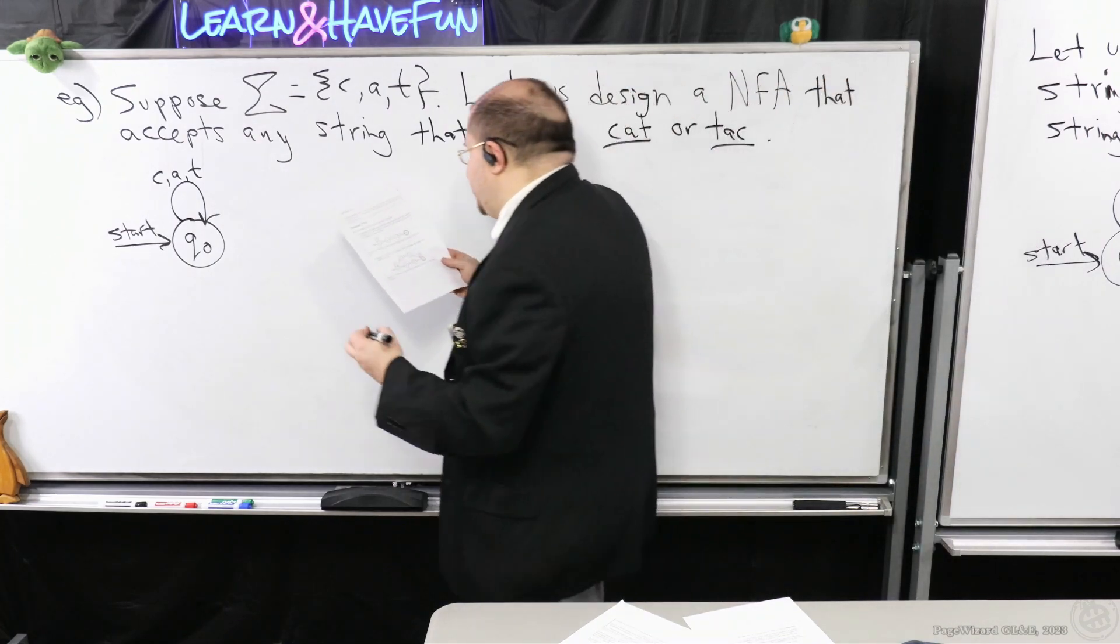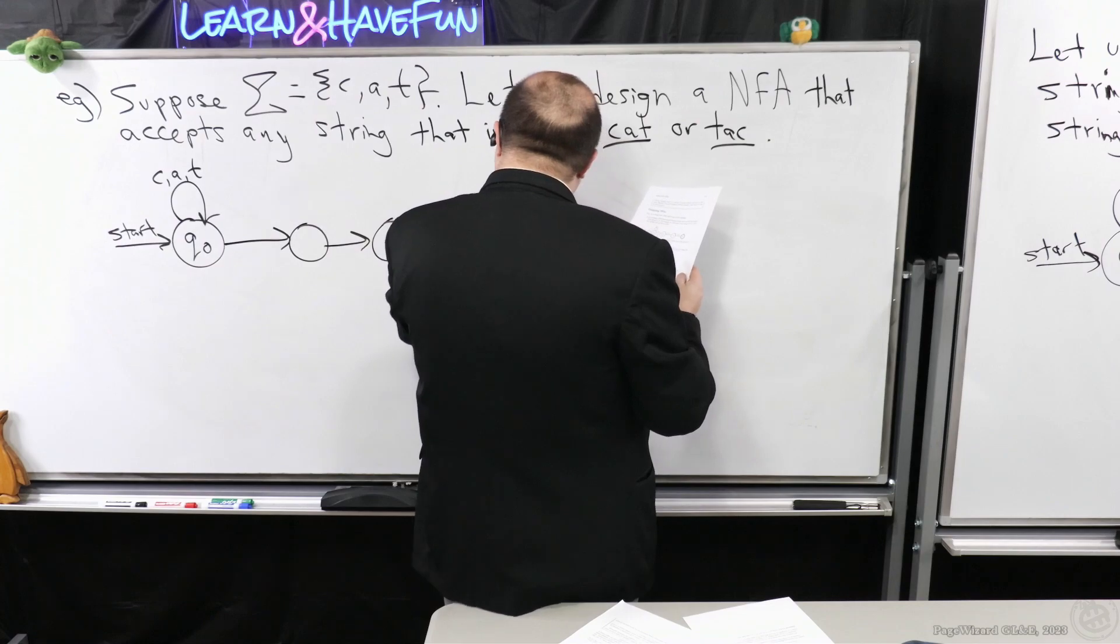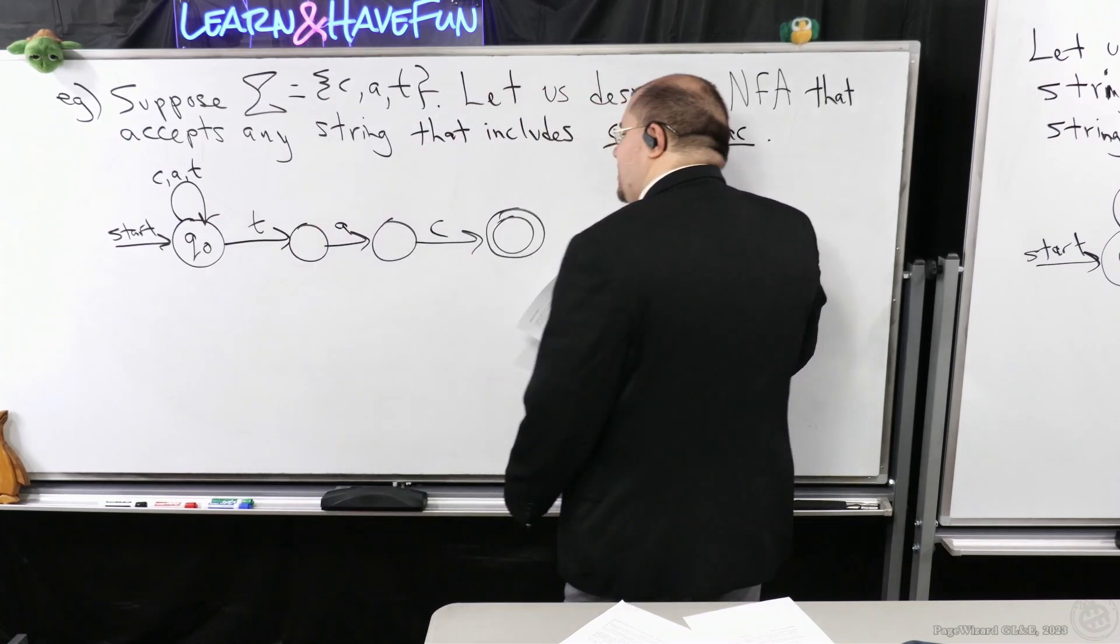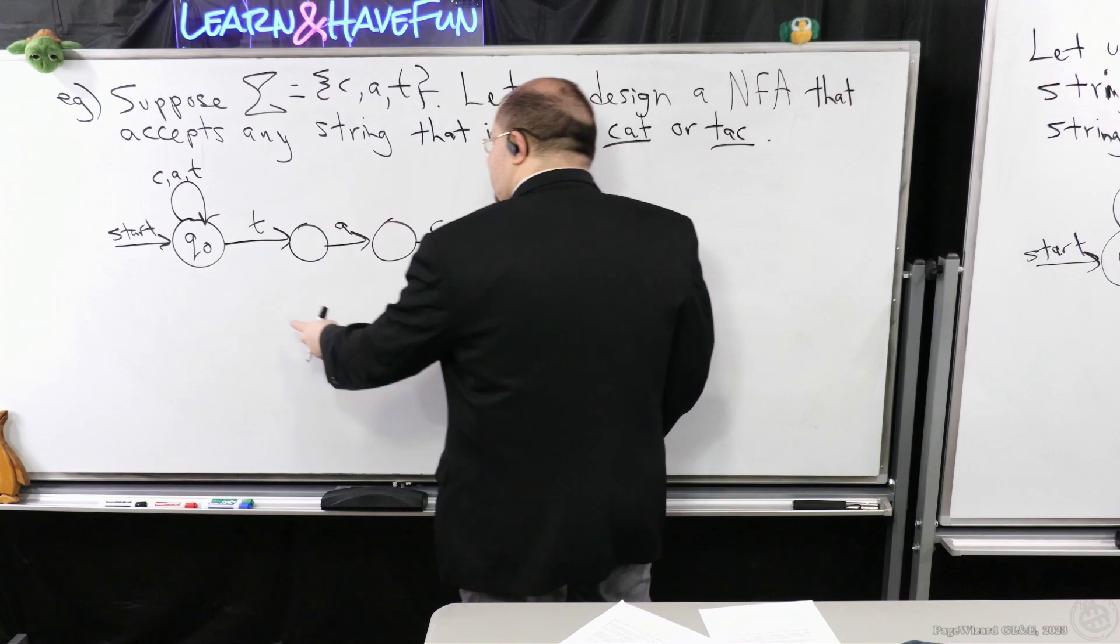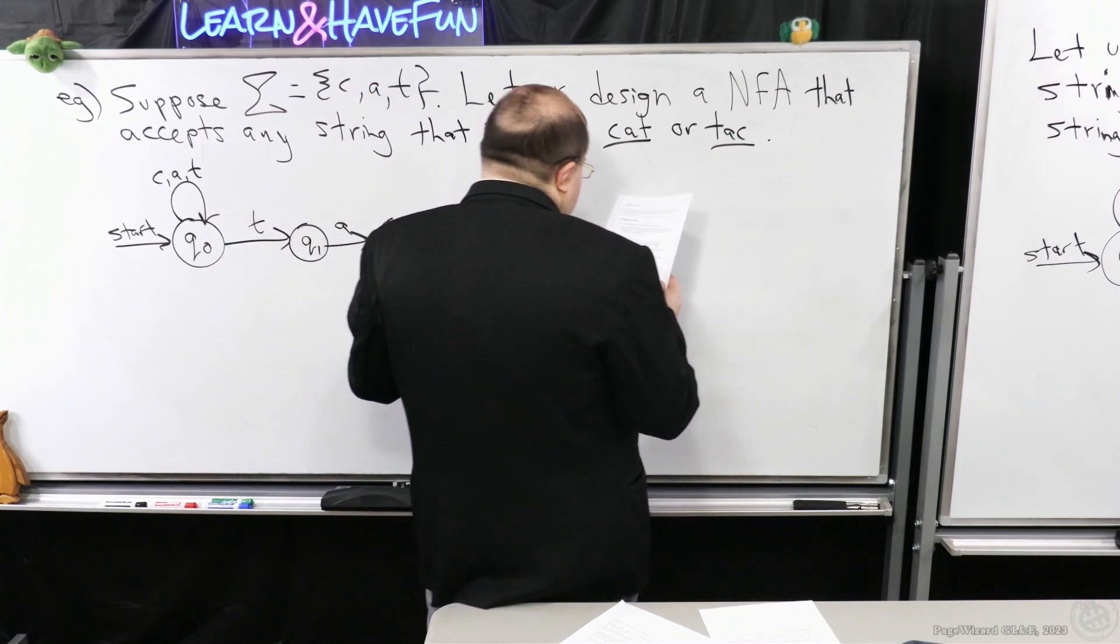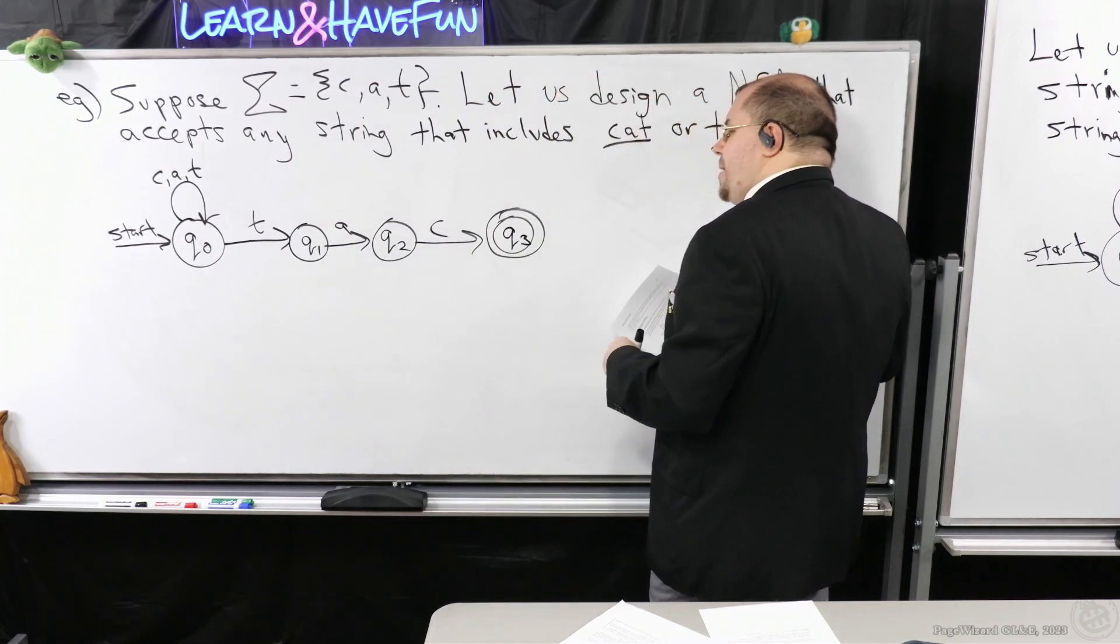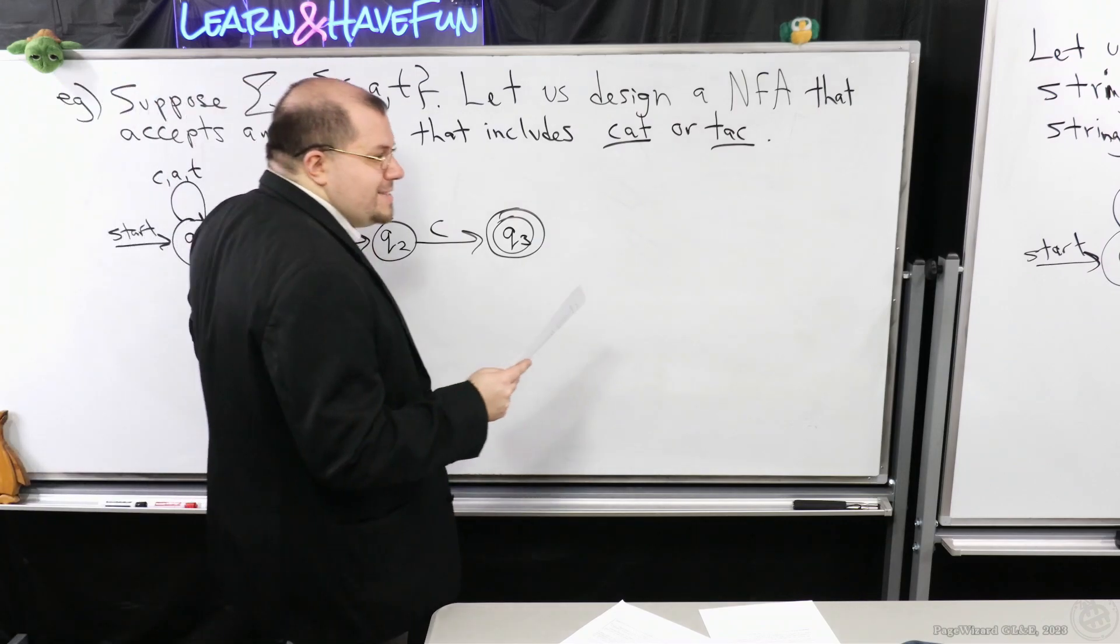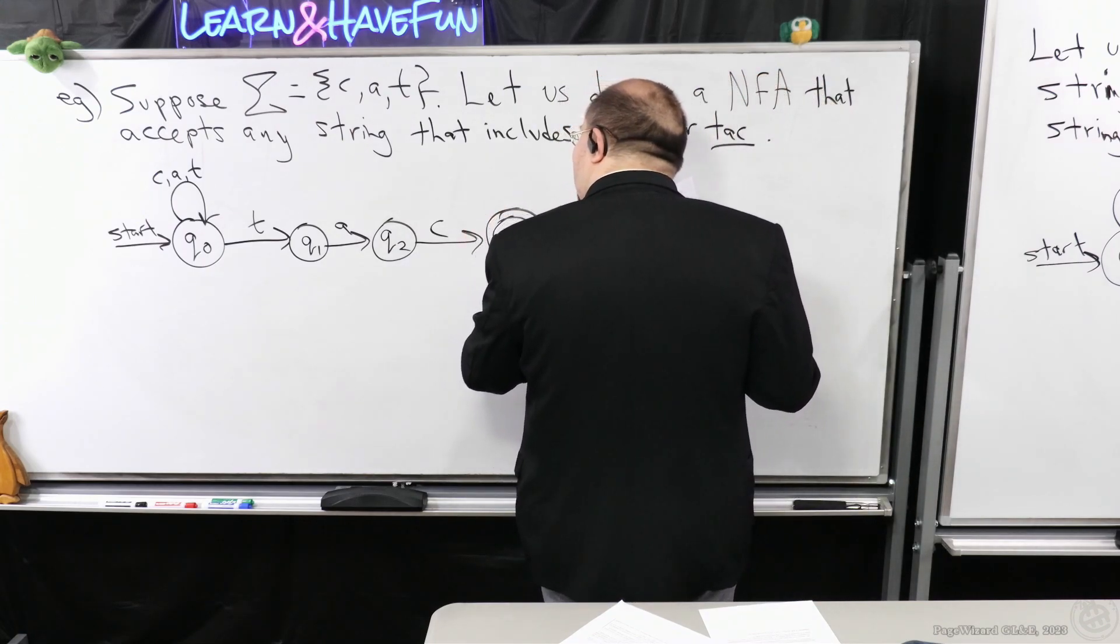So let's consider tack first. So if I want to detect tack, does anybody have any ideas of how I would detect tack? Well, I know tack would look like this, right? We've seen this technique before when we were studying DFAs, right? Where I would just have a pattern that's encoded in the pathway like this. Right? This should cut it, right? However, it says that it accepts any string that includes tack. So keep in mind, as long as tack appears in the string, we're okay, right?